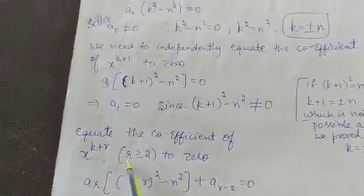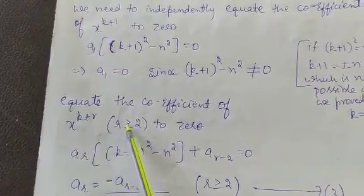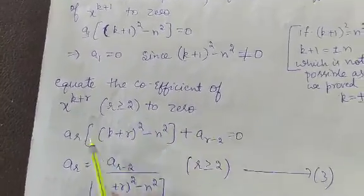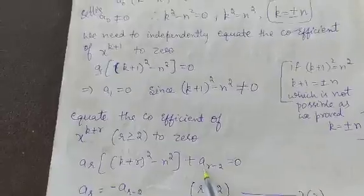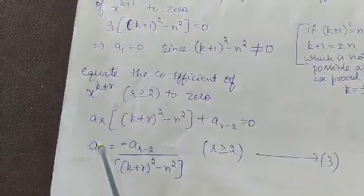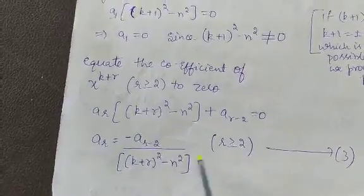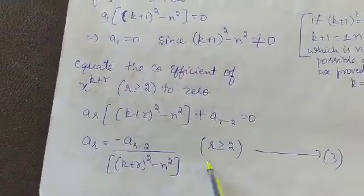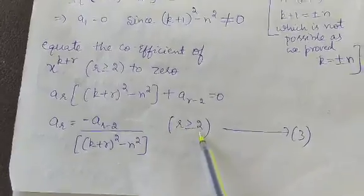In general, equating the coefficient of x^(k+r) for r ≥ 2 to zero gives the recurrence relation: aᵣ[(k+r)² − n²] + aᵣ₋₂ = 0, which yields aᵣ = −aᵣ₋₂ / [(k+r)² − n²]. Call this equation 3.